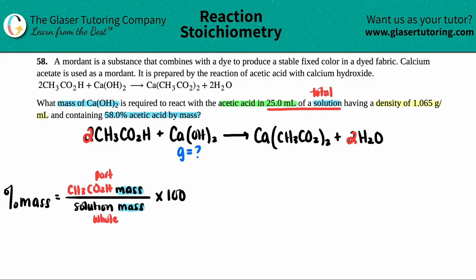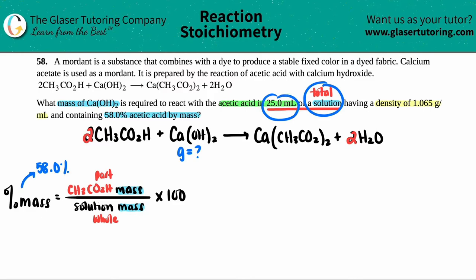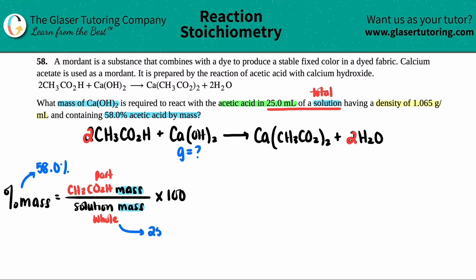They gave us 58.0 percent mass and told us the total solution is 25 mL. But I can't use 25 mL directly because I need a mass value in grams. The first thing I have to do is use the density to convert from milliliters to grams.